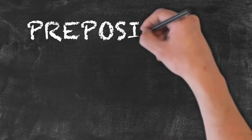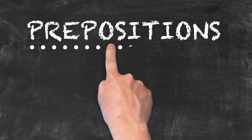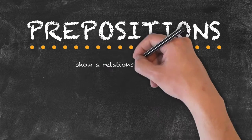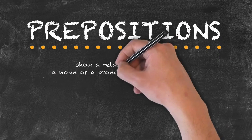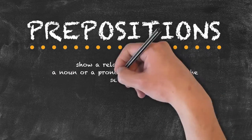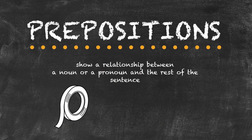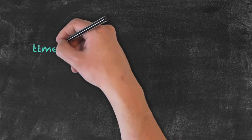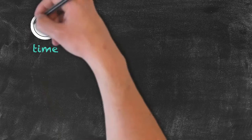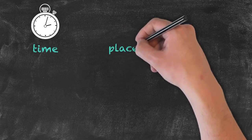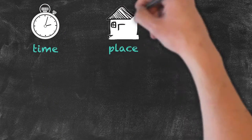Moving further down our list of the parts of speech, we have prepositions. Prepositions show a relationship between a noun or a pronoun and the rest of the sentence. We have three main categories: time, place, and movement, as well as a miscellaneous category that doesn't fit the other three.